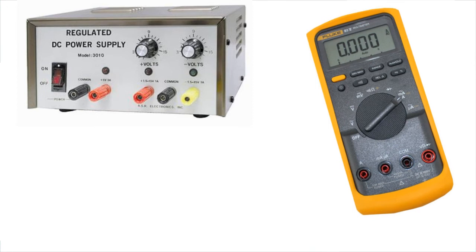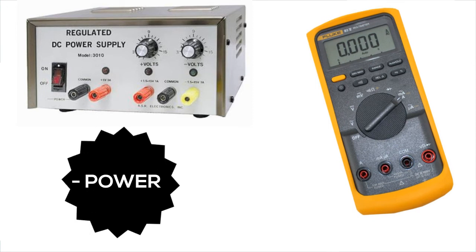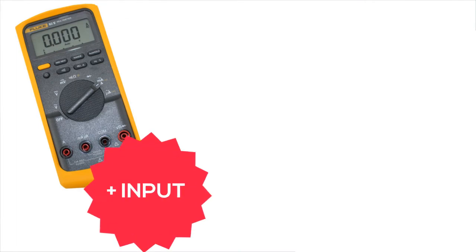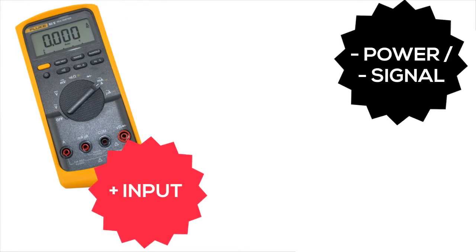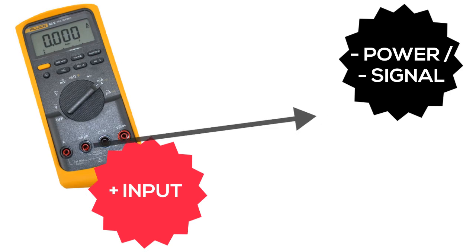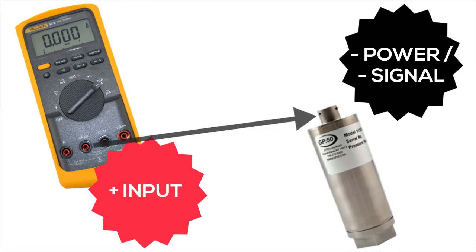Next, hook up the negative power or negative side of the power supply to the negative side of your multimeter, usually the black wire or lead. Then hook the positive input side of the multimeter to the negative power or negative signal side of your transducer.